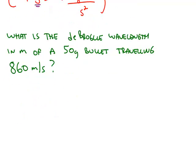For example, we could calculate the de Broglie wavelength of a much larger particle than an electron. We could calculate it for a 50 gram bullet that's traveling 860 meters per second.